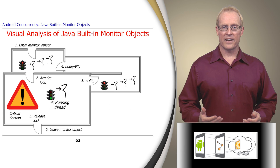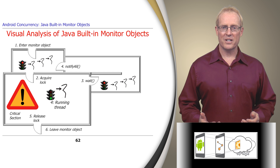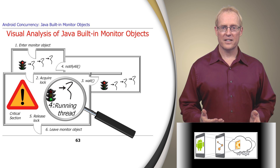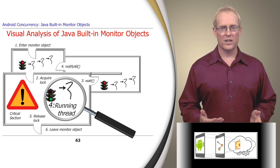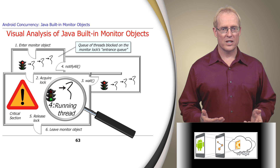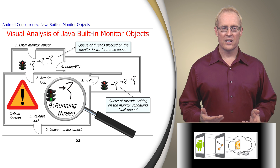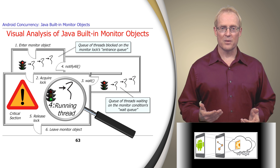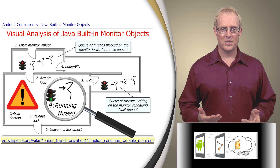Now that we've provided an overview of Java built-in monitor objects, we'll visually analyze their behavior in the context of our simple blocking queue example. As shown in this diagram, each Java monitor object has one entrance queue associated with its monitor lock, and one wait queue associated with its implicit monitor condition.